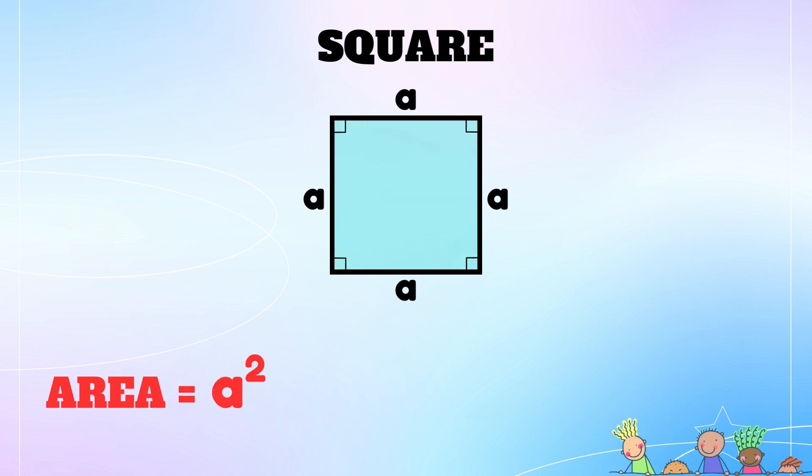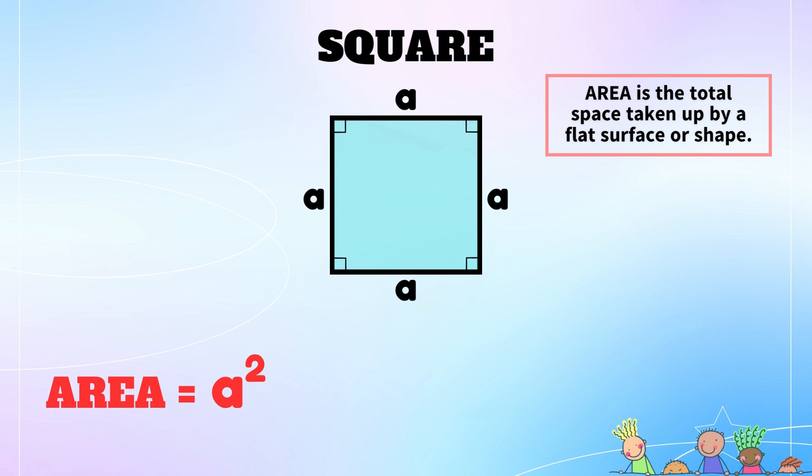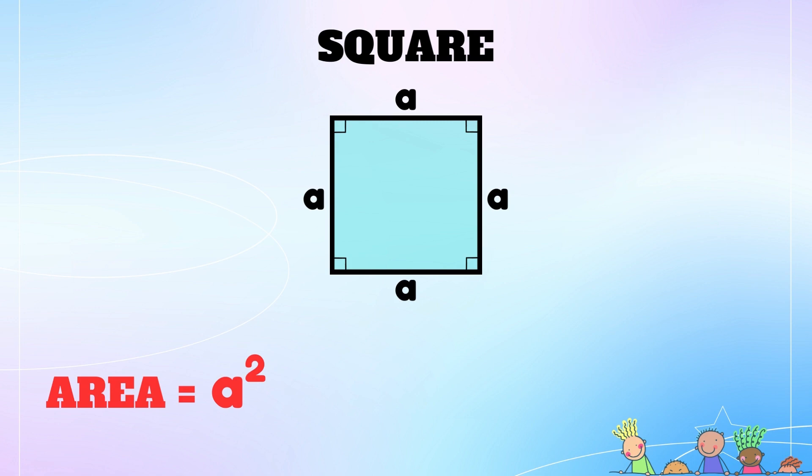To calculate the area of the square, we must multiply the base and the height together. Since the base and the height of a square are equivalent, we can write the formula as a times a, which is essentially a squared.